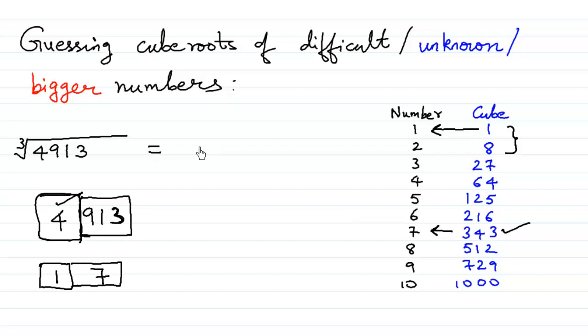So the cube root of this is 17. If you do it in the corner, 17 into 17, that's 289, and then if you multiply it with another 17 you shall be getting 4913.